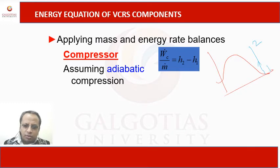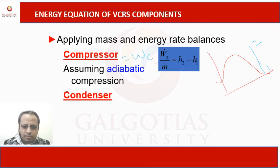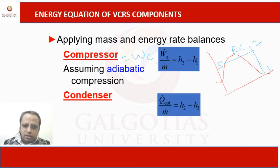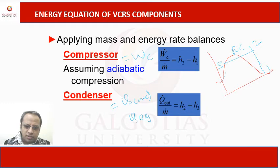For the compressor, process 1 to 2: at state 2 the refrigerant converts into the superheated state, so the enthalpy at state 2 is more than at state 1. The enthalpy difference H2 minus H1 gives the compression work — we can write compression work equals H2 minus H1. For the condenser, operating at constant pressure in process 2 to 3: at state 2 and state 3, following the liquid line and vapor line, the enthalpy of the liquid line is less than that of the vapor state. The expression H2 minus H3 gives Q_condenser or the heat rejection from the cycle.